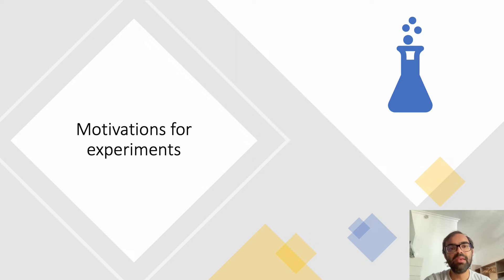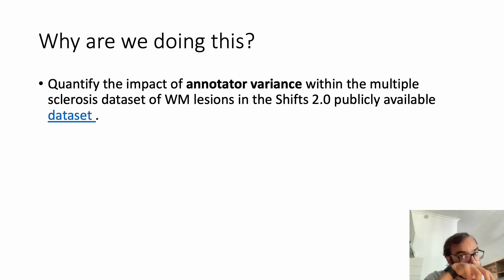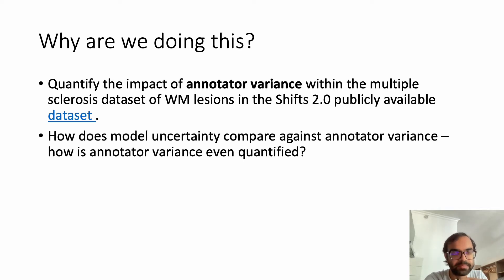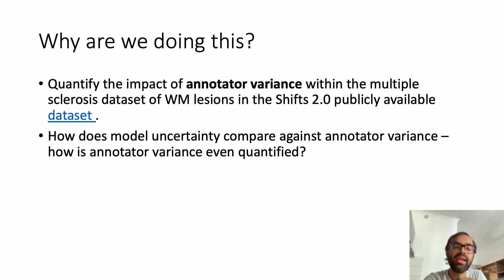Let's start with the motivations for our experiments. We want to quantify the impact of annotator variance or the data uncertainty within the multiple sclerosis dataset of white matter lesions in the SHIFTS 2.0 publicly available dataset. We then want to compare how the model uncertainty, which has been provided as part of this hackathon task, compares against this data uncertainty or the annotator variance. The underlying question here is how is the data uncertainty even quantified?